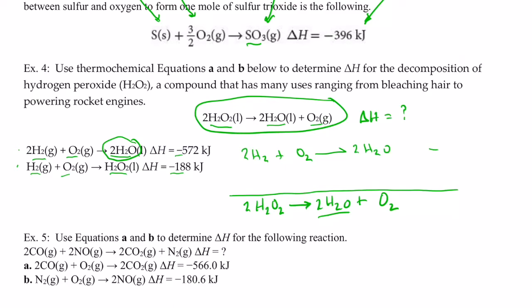Now, the delta H for that reaction is negative 572 kilojoules. Okay, so I've got my two waters on the product side where I want them. Now, let's take a look at the second reaction. The second reaction is H2O2 on the product side, but I need it on the reactant side. So what I need to do is turn that reaction around. So instead of forming H2O2, I want to decompose it. So let's write that backwards as H2O2 reacts to form H2 plus O2.